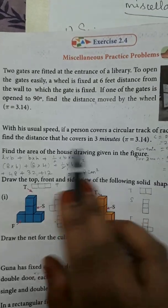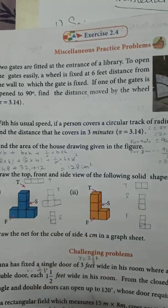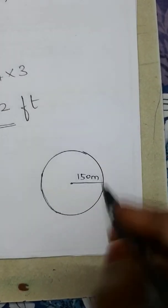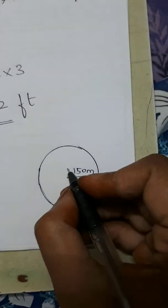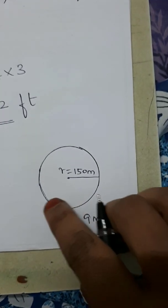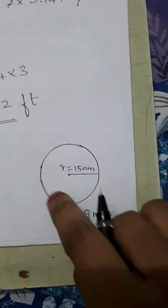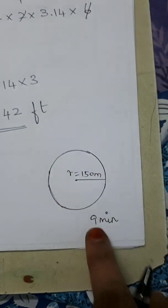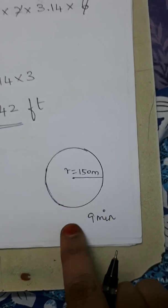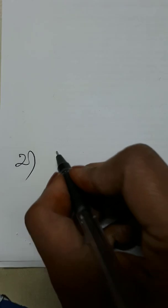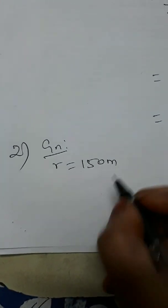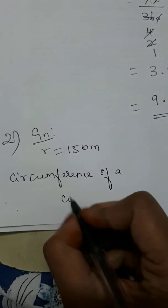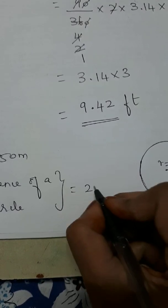In 9 minutes, the person completes the full circular track. We need to find the distance covered in 3 minutes. The radius given is 150 meters. The circumference of a circle is equal to 2πr units.